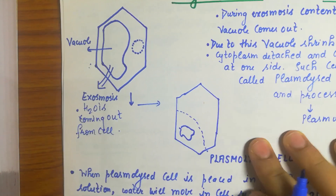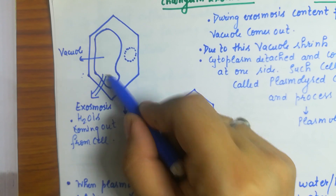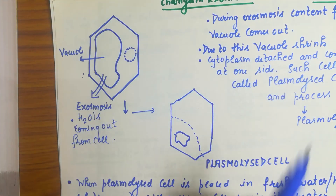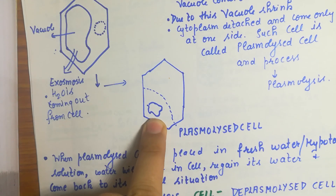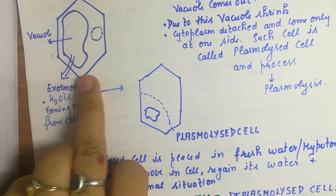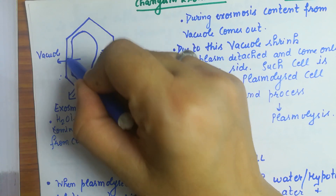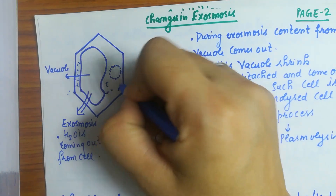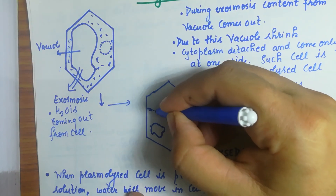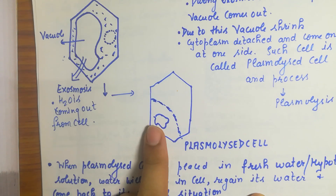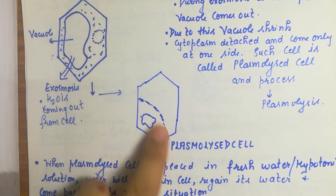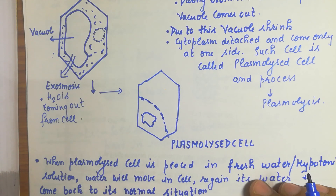Yes, water is being released — coming out. When this water is released from the vacuole, the vacuole will shrink and decrease in size. When you take content out from this area, it will change its size and become very small. The vacuole shrinks, and the cytoplasm shifts to one side, becoming a thin line-like structure.